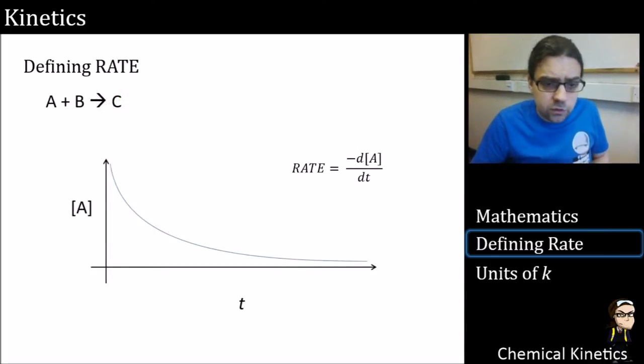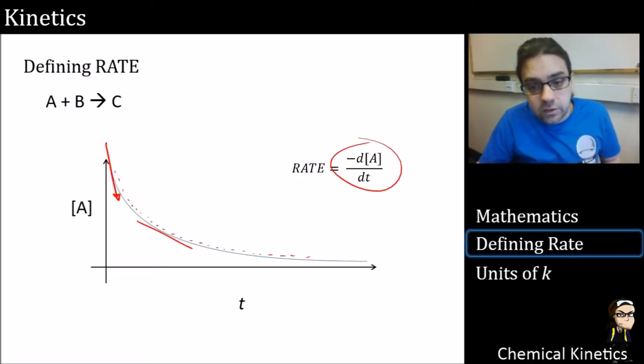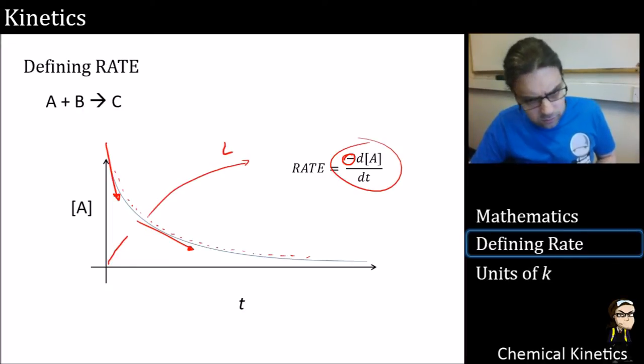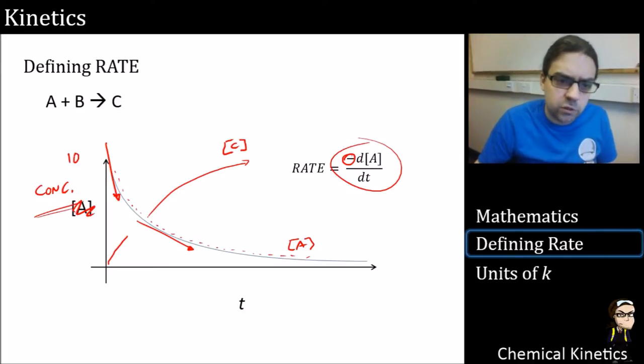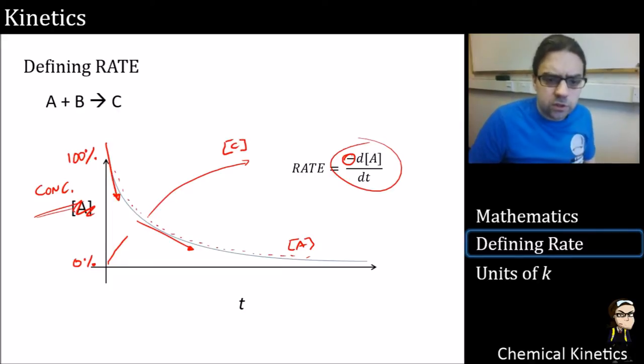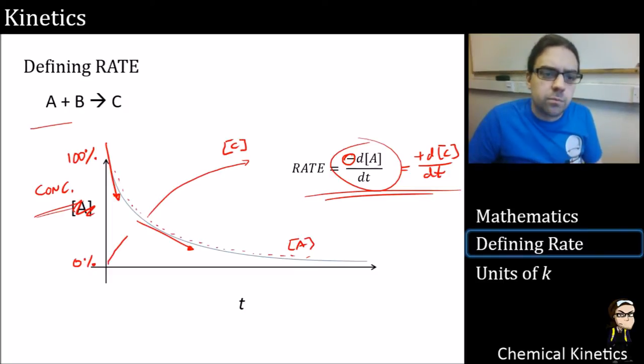Let's have a look at it here. A decreases. This is our change over time. Our rate is at any point the gradient of this or the negative of that gradient because the gradient always points down. If we have our more generic concentration, one goes down, the other one goes up. So rate is also equal to plus dc by dt. You need to be able to build an equation like this based on a reaction.